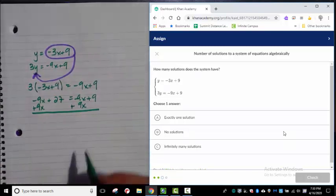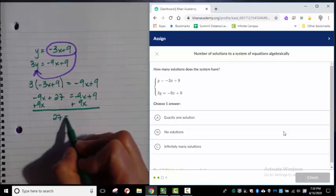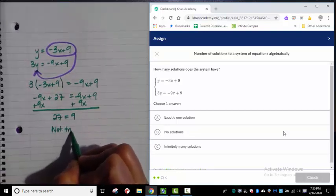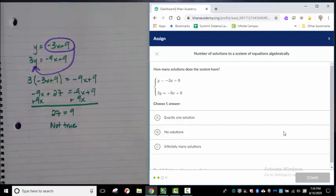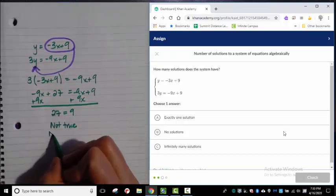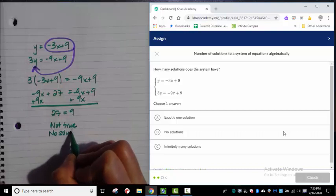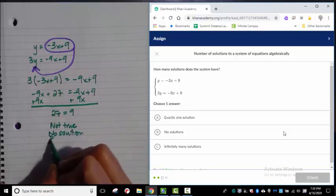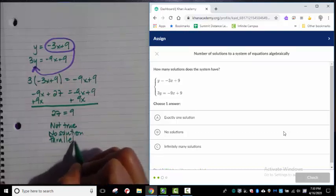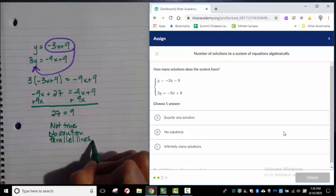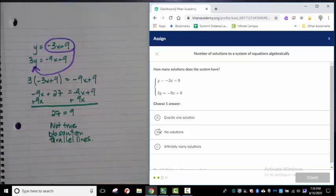Now I've got 27 equals 9. That is definitely not true. So this is exactly what we were just talking about. This means that there are no solutions to this system. Which means that these must have been parallel lines. Ones that never intersect. So here I'm going to say no solutions.